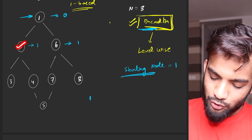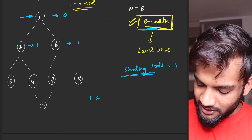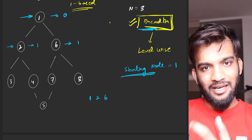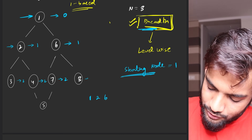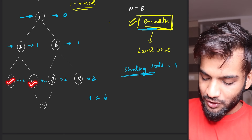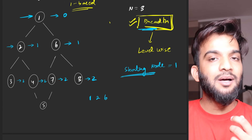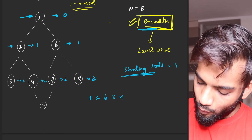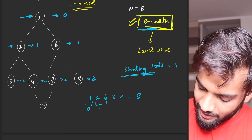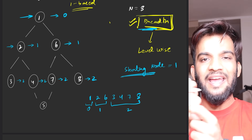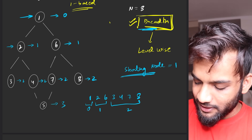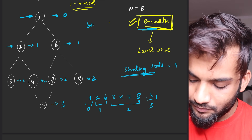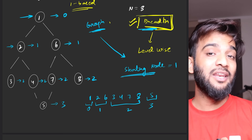In BFS you can traverse level-one nodes in any order — for example, node 2 then 6, or 6 then 2, that's completely your choice. The next level is level two, and you can write those nodes in any order as well — like 3, 4, 7, 8, or 8, 7, 4, 3. As long as you traverse all nodes in a level-wise fashion, it is acceptable. Level three follows last.